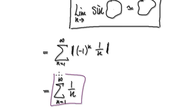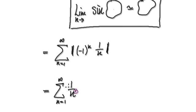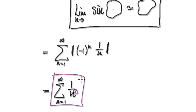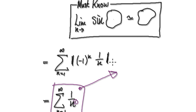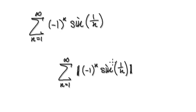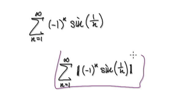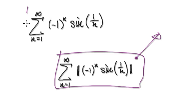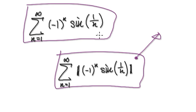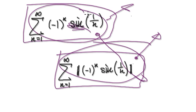By now, you should recognize this as a p-series with p equal to 1. We know immediately that this is going to diverge — it's the harmonic series. So going back to the theorem, we can conclude that the absolute version of our series diverges. Therefore, we cannot determine anything about the original series from this — it could still converge or it could still diverge. This result doesn't tell us anything about the original series.